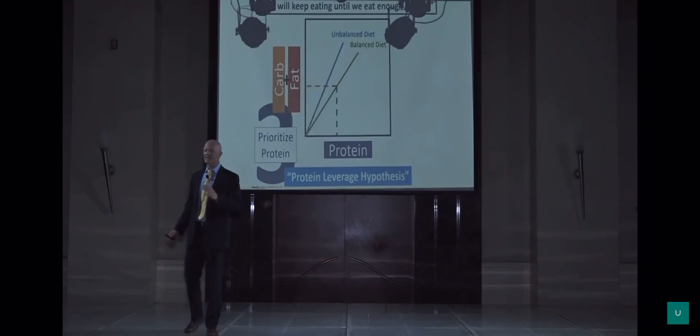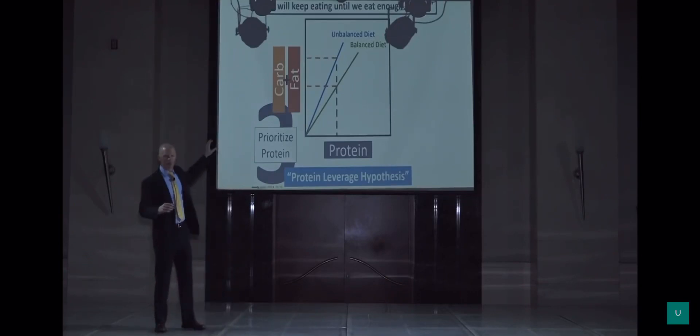But as the diet gets deficient in protein, as you see it shifts this curve up, so we eat more and more carbohydrate and fat until we get to that right amount of protein.